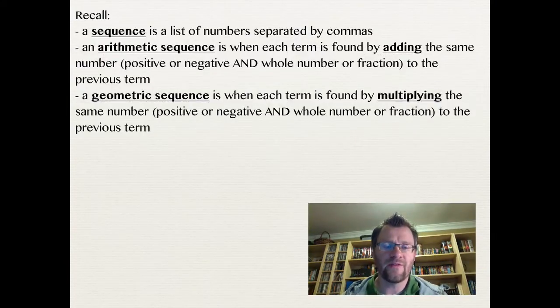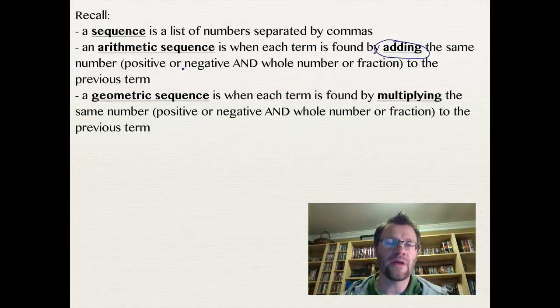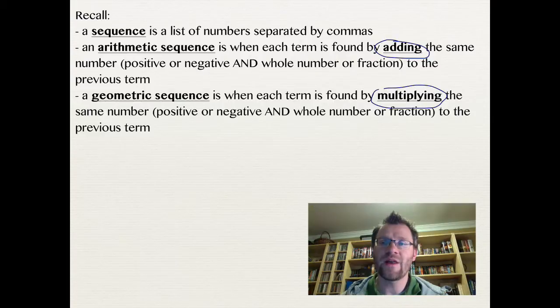So recall that a sequence is a list of numbers separated by commas. And we know that an arithmetic sequence is when each term is found by adding the same number. It could be positive or negative, and it could be a whole number or a fraction to the previous term. Now a geometric sequence is when each term is found by multiplying the same number. That number again can be positive or negative, and it could be a whole number or a fraction to the previous term.